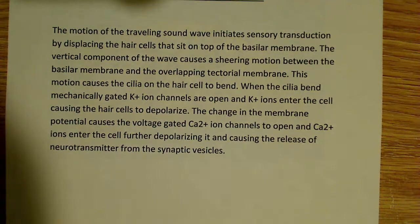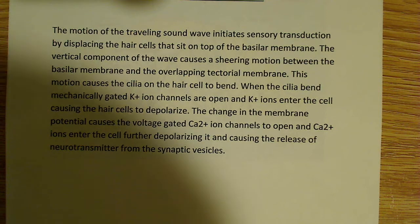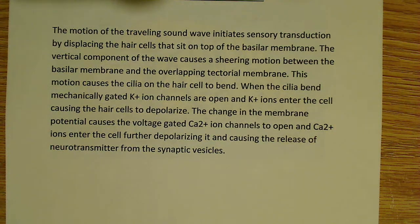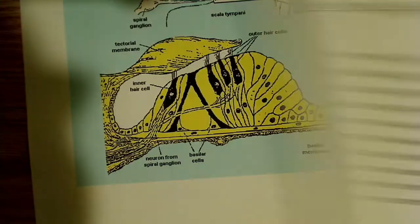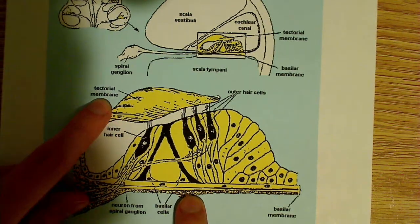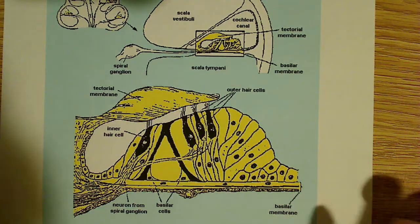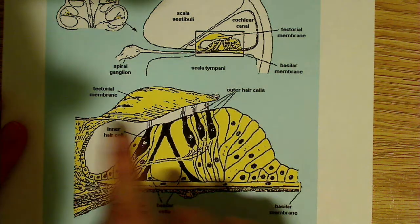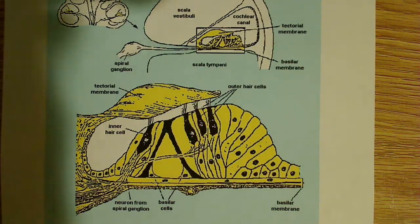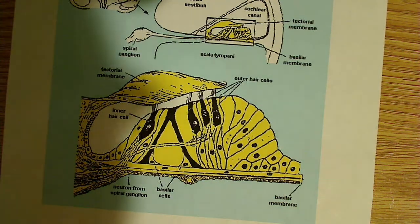The traveling sound wave initiates the sensory transduction by displacing hair cells that sit atop the basilar membrane, and the vertical component of the wave causes a shearing motion between the basilar membrane and the overlapping tectorial membrane. Essentially, this shearing motion is going to occur between these two membranes, and that's going to actually displace these hair cells and continue the process going.